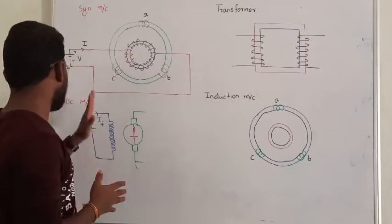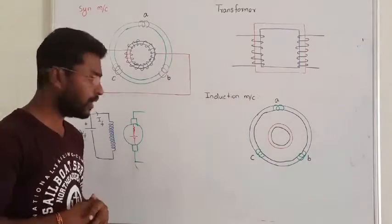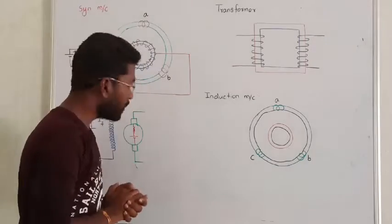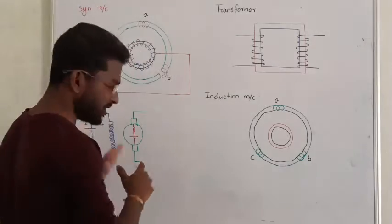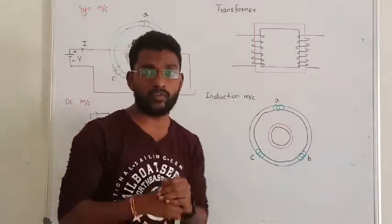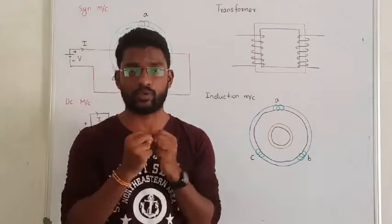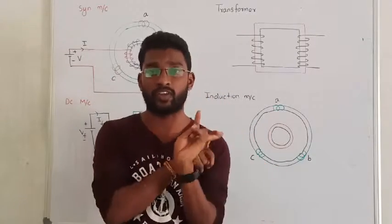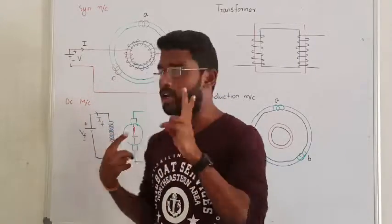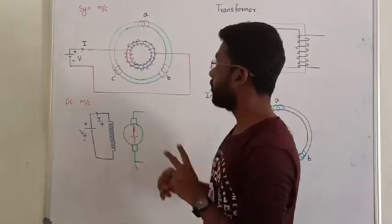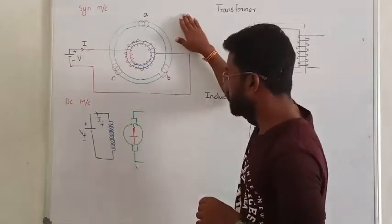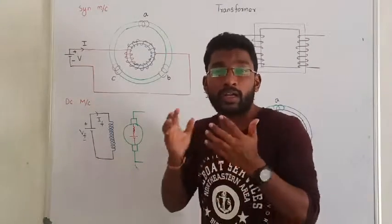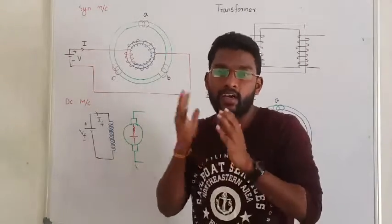We did not start DC machines yet. We will see the difference. So this synchronous machine and DC machine, we have two fluxes — one is called armature flux, another one is called field flux. So the synchronous machine and DC machine are called a double excited machine.